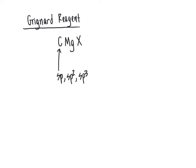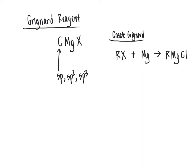Grignard reagents are created by reacting the corresponding halogenated compound — where X is a halogen — with magnesium. What happens is that the magnesium forms a direct bond to the carbon and the chlorine is out as a counter ion. The carbon bonded to the halogen atom can be an SP, SP2, or SP3 carbon, and this reaction works really well to create a Grignard reagent.